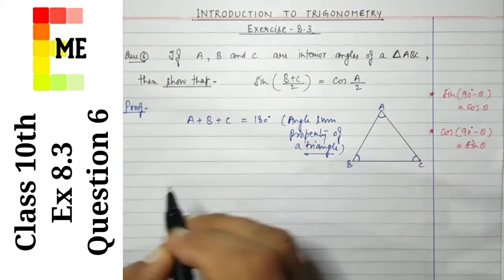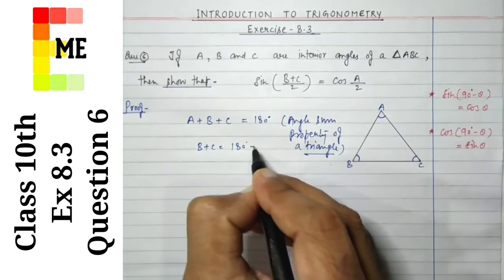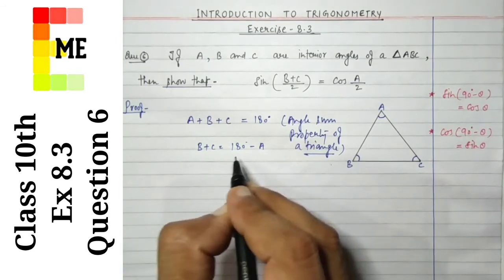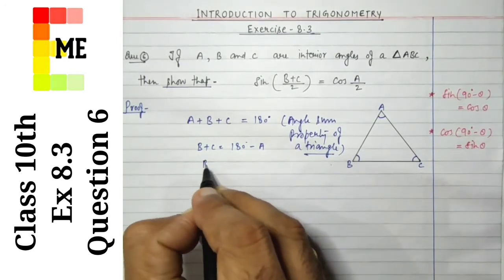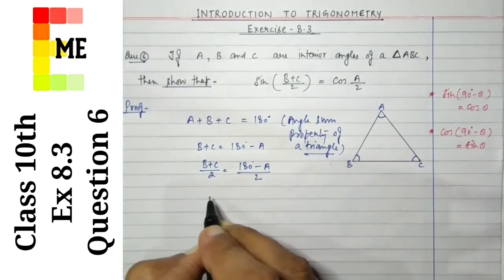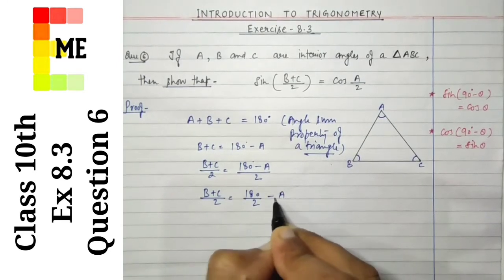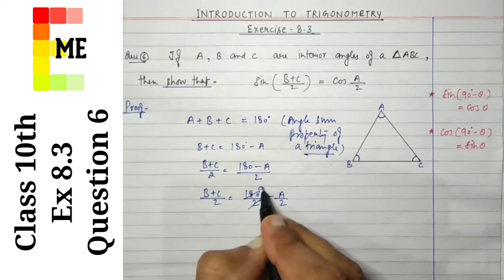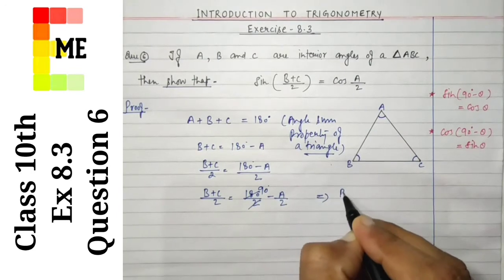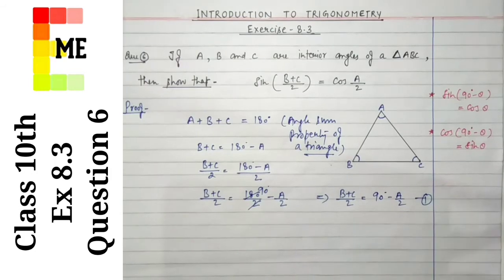So, A plus B plus C is equal to 180 degrees, then B plus C is equal to 180 degrees minus A. Dividing both sides by 2, B plus C by 2 is equal to 180 divided by 2 minus A divided by 2, which gives us B plus C by 2 is equal to 90 degrees minus A by 2. This is equation number 1.